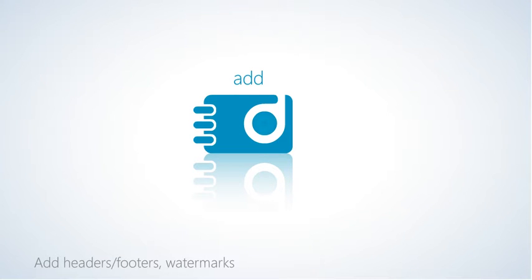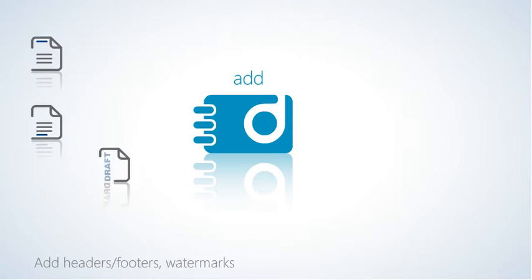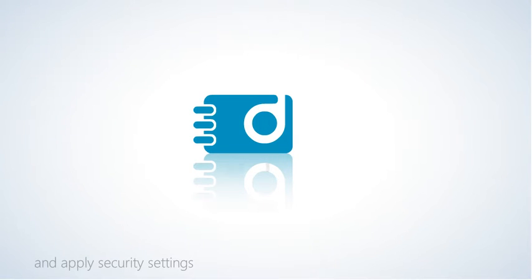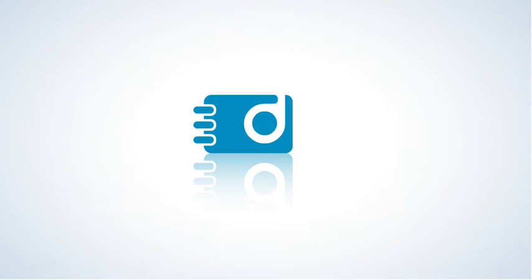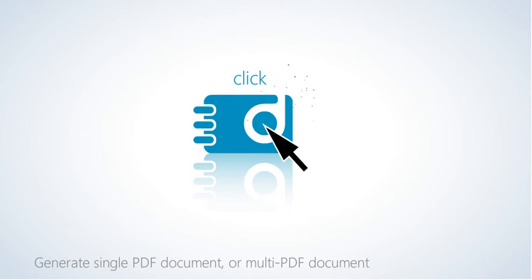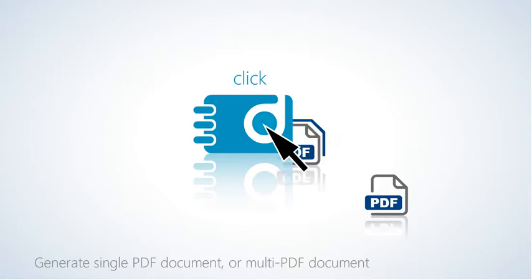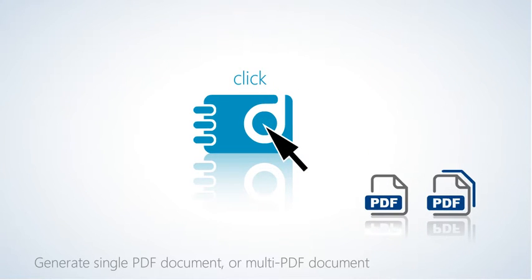Add a cover page to the electronic binder. Add headers and/or footers, watermarks, and apply security settings. Click to generate a single PDF document or multi-PDF document.